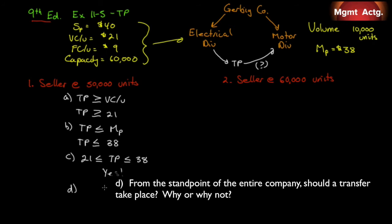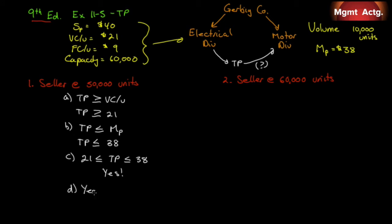Requirement 1D: from the standpoint of the entire company, should a transfer take place? Yes — it is beneficial for both divisions. Let's put a number to it. Say the electrical division supplies at $38: the motor division is no worse off, but the electrical division uses spare capacity to sell an extra 10,000 units at a contribution margin of $38 minus $21 = $17, yielding an increase in operating income of $170,000.